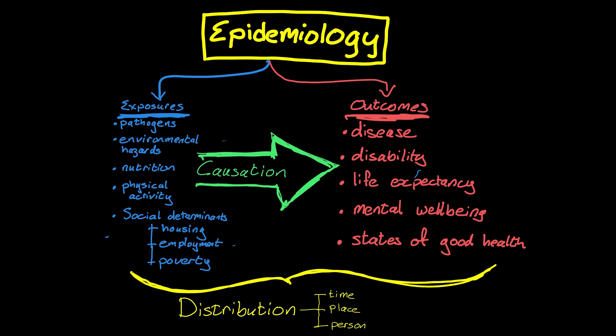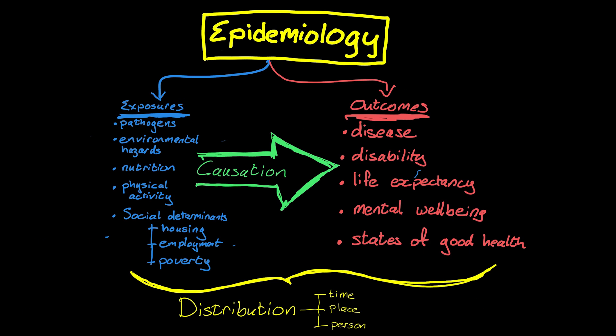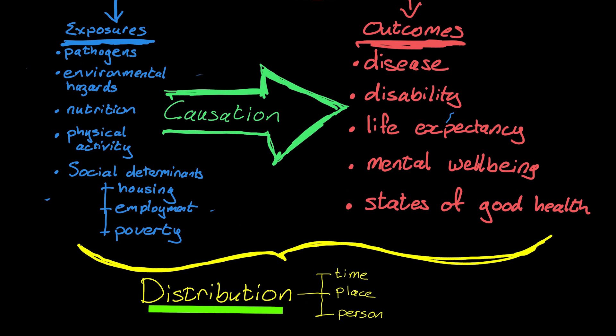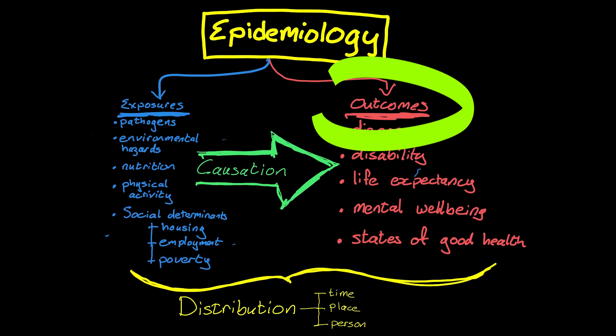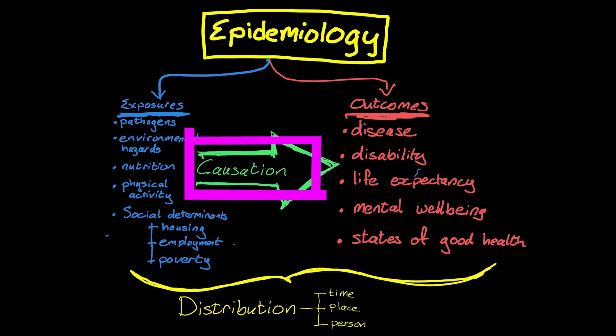So let's first talk about what epidemiology is. This is my definition: it's understanding the distribution in terms of time, place, and person of outcomes and exposures, and then using that to understand the causative relationship between them. Let's dig a little bit deeper.